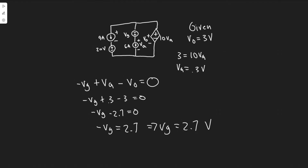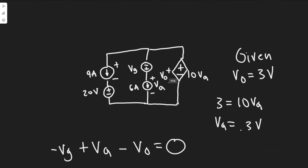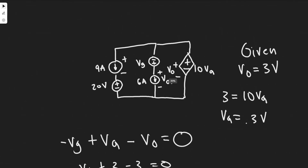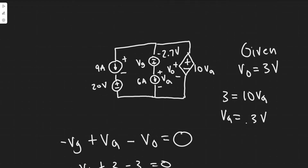Keep in mind Vg is in volts. The value turns out to be negative — minus 2.7 volts — meaning the assumed polarity is opposite the actual polarity, but we leave it as is. You can actually pick the polarity of Vg in any direction; it will work out positive or negative either way.